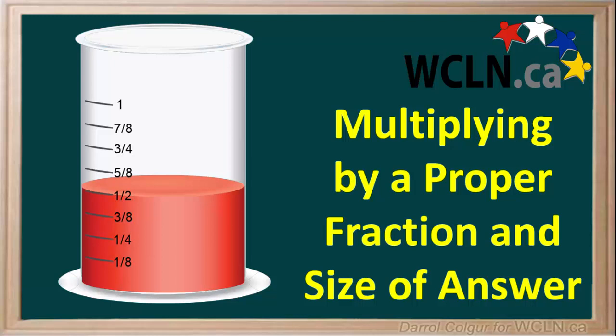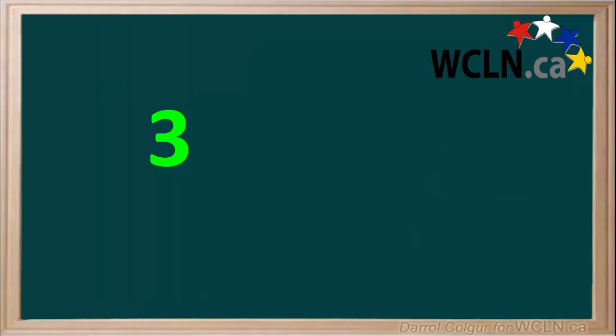Here's something to think about when we're multiplying. When we multiply a number by a whole number, the answer is always larger than the original number.